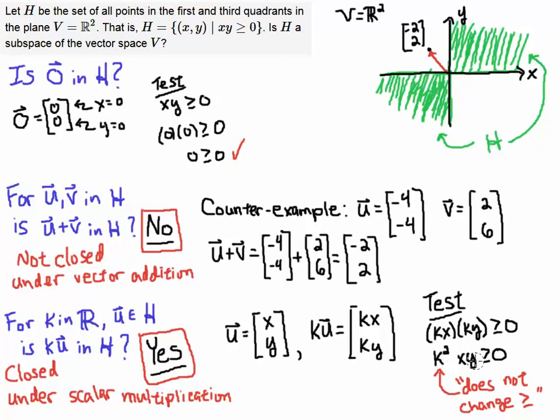So K² times xy does not change this condition that is greater than or equal to zero. So KU is in the set H, and so we say that, yes, it satisfies the condition, and yes, this set H is closed under scalar multiplication.